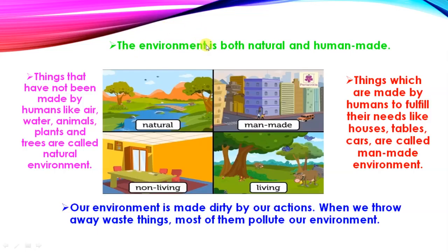The environment is both natural and man-made. Things that have not been made by humans — like air, water, animals, plants and trees — are called the natural environment. Things which are made by humans to fulfill their needs — like houses, tables, and cars — are called the man-made environment. This is a picture of natural environment, and this is a picture of man-made environment.